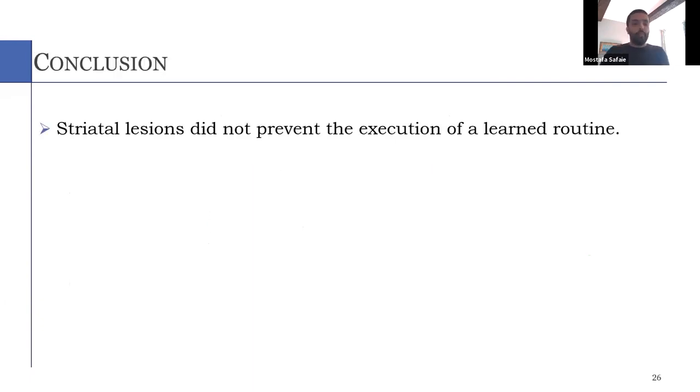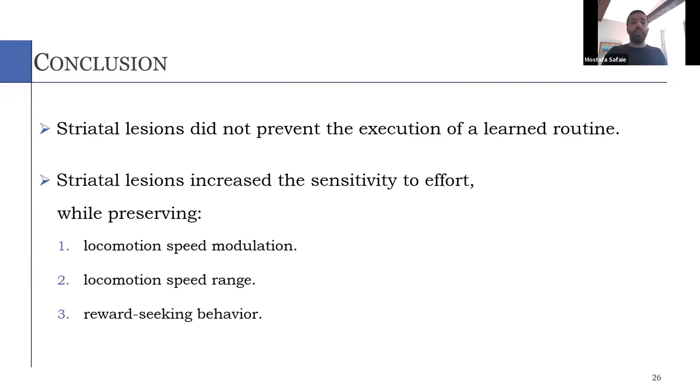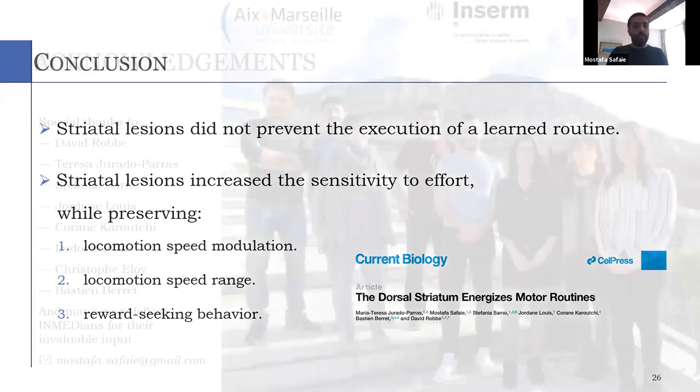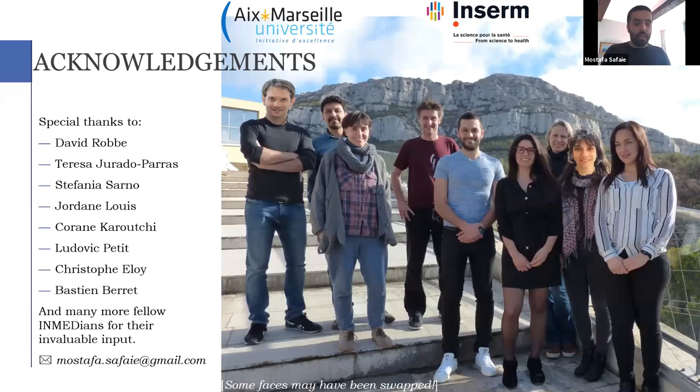So in conclusion, I hope I showed convincing evidence that the striatal lesions did not prevent execution of a learned motor routine. However, they increased the sensitivity to energy expenditure or effort while preserving locomotion speed modulation, preserving locomotion speed range and reward seeking behavior. And if you're interested in this work, I just summarized this paper that was recently published, and you can have a look for more analysis and more data. And I'd like to also thank all the members of the team, David, my supervisor, and especially Teresa and Estefania, my two co-first authors in that paper. Thank you.